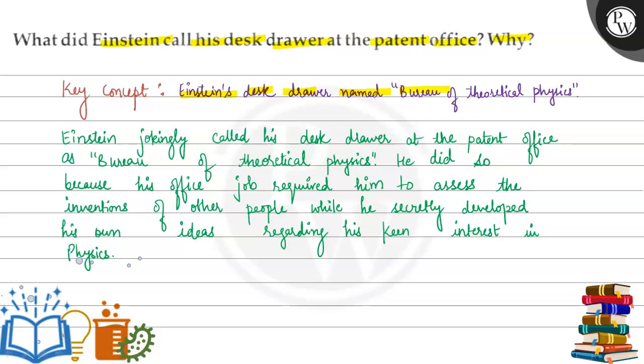Einstein's desk drawer was named Bureau of Theoretical Physics. Einstein jokingly called his desk drawer at the patent office as Bureau of Theoretical Physics.